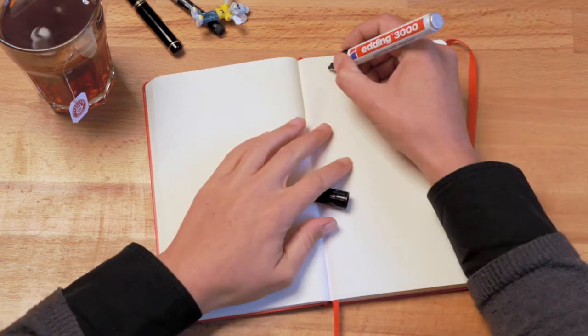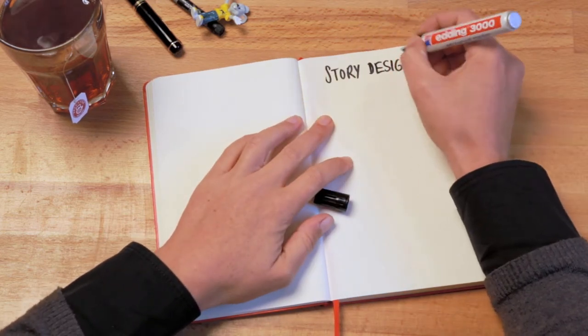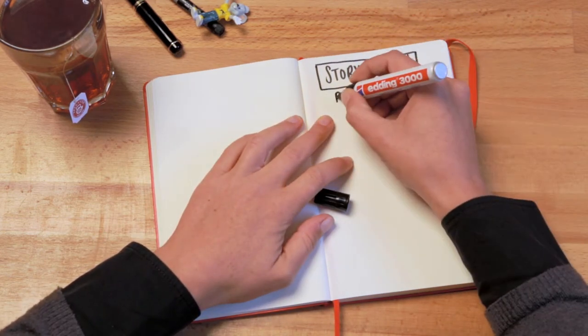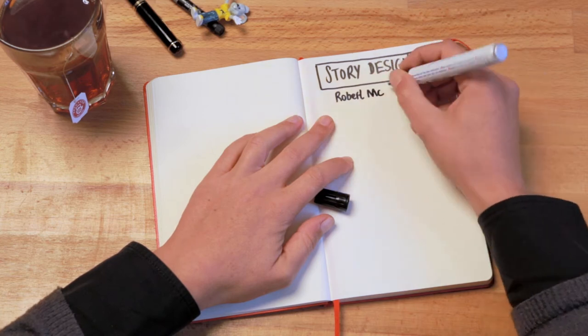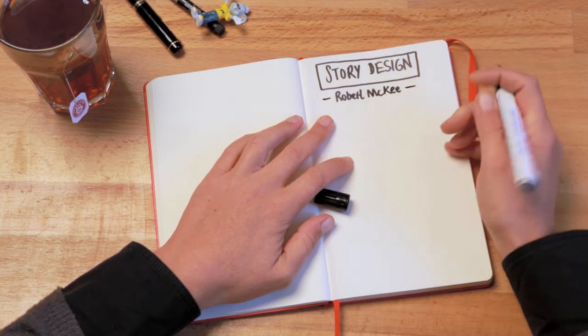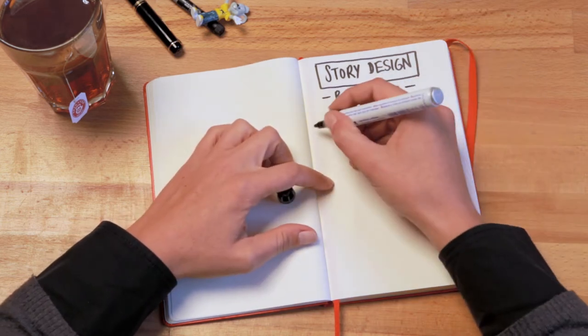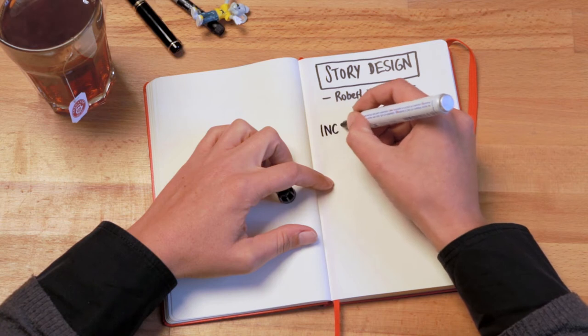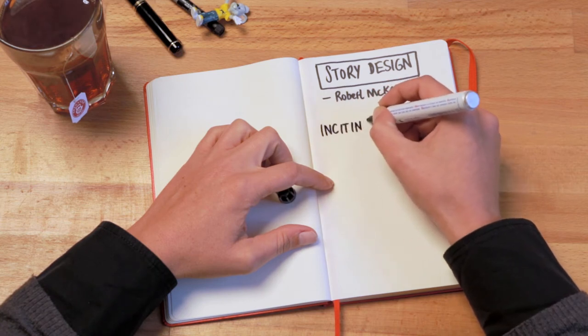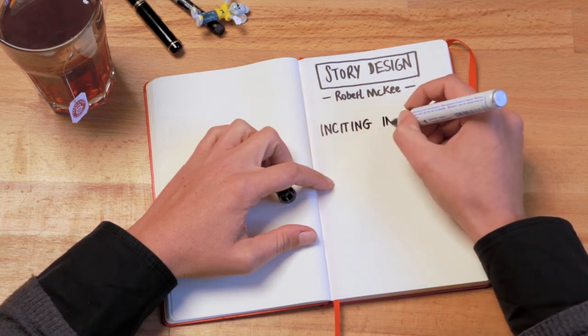Asked to explain his term story design that he always uses, Robert McKee answered in an interview with Deborah Eckerling: An event comes along in life we call the inciting incident. Either by choice, accident, or both, life is thrown out of balance.